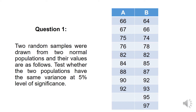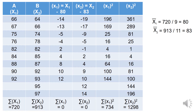On the basis of this understanding we will solve a numerical related to F-test. On your screen you have a question which relates to two random samples drawn normally from two populations, and their values are given on the right hand side of the screen. You are required to test whether the two samples have the same variance at 5% level of significance. The two samples are A and B, marked as X1 and X2 respectively.